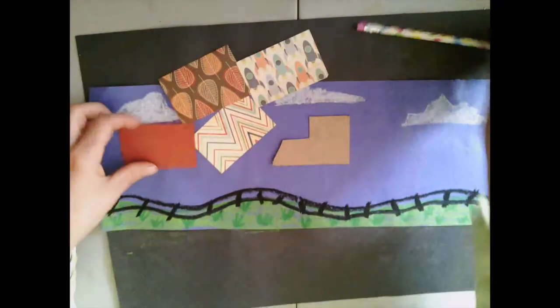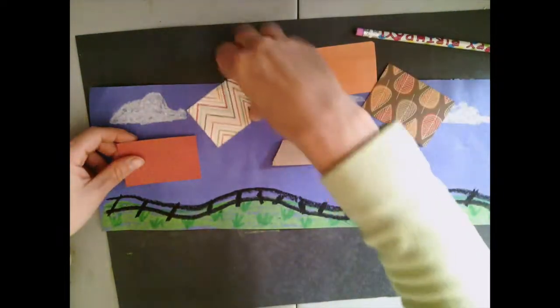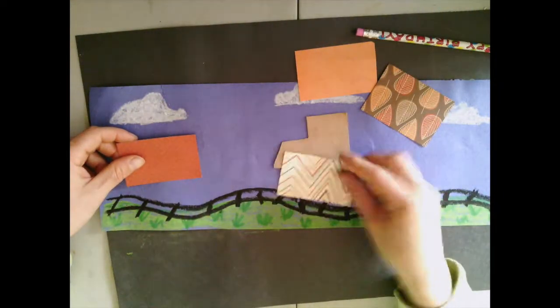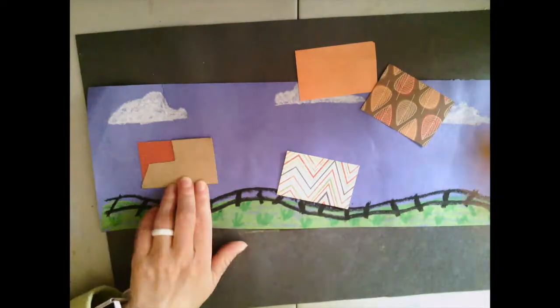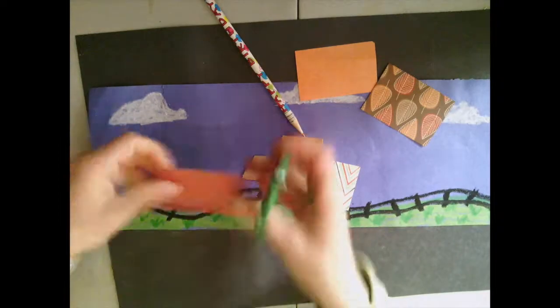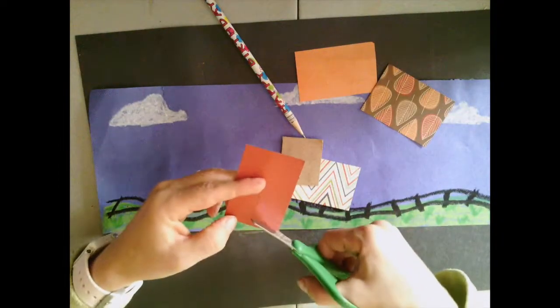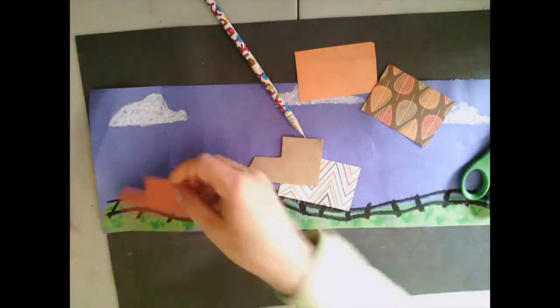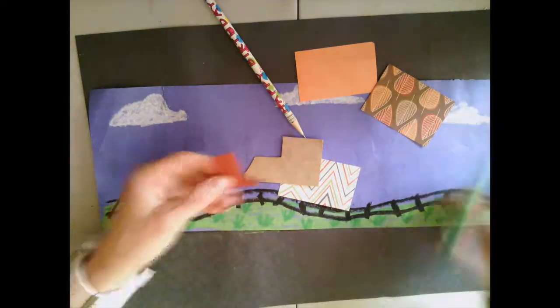You'll find some pieces of paper that have different kinds of textures and different kinds of patterns on them that we can use to make up our texture train. There's also a pattern of an engine car that you can use. So I just traced that in pencil, and I'm going to cut out the shape that I could use for my engine.